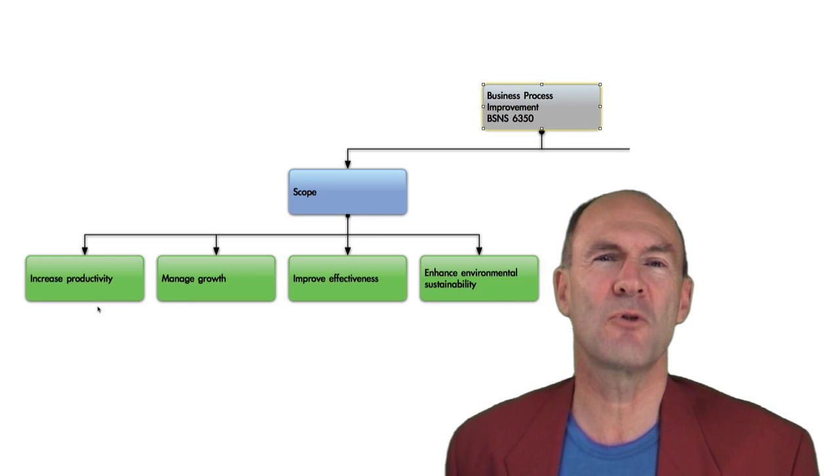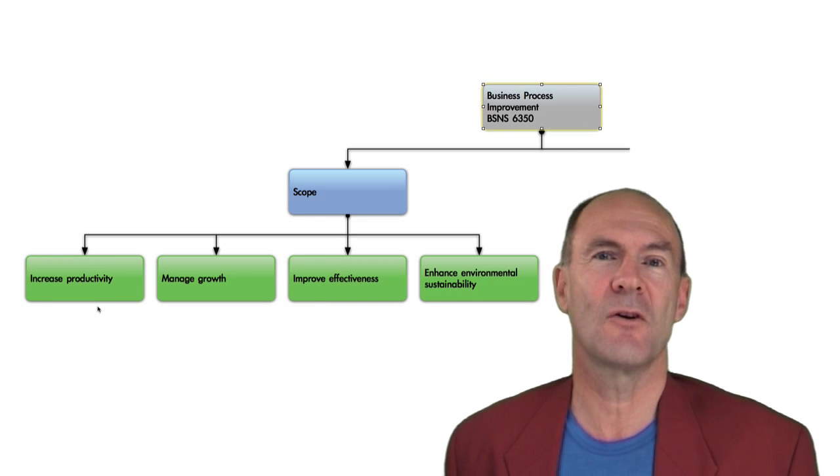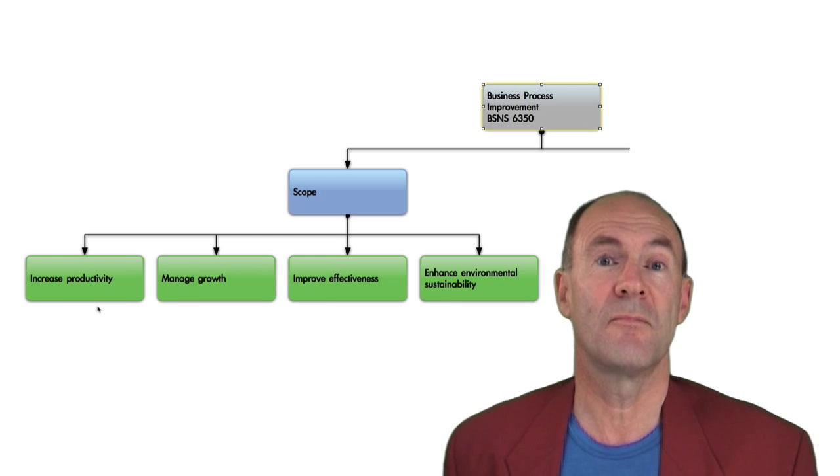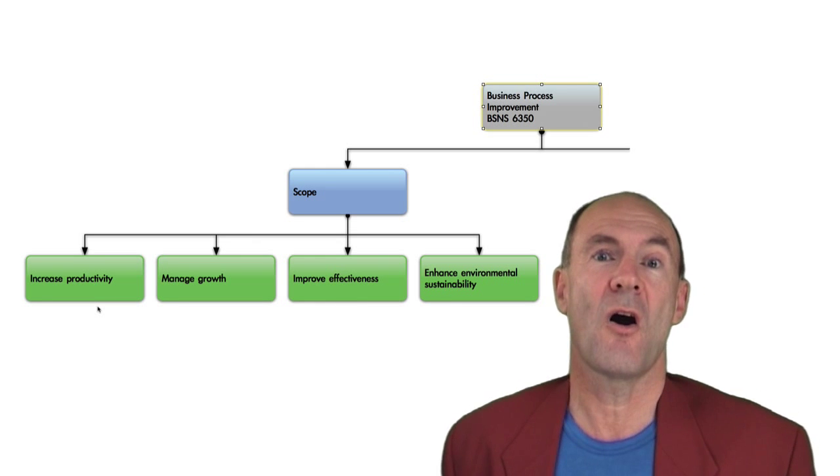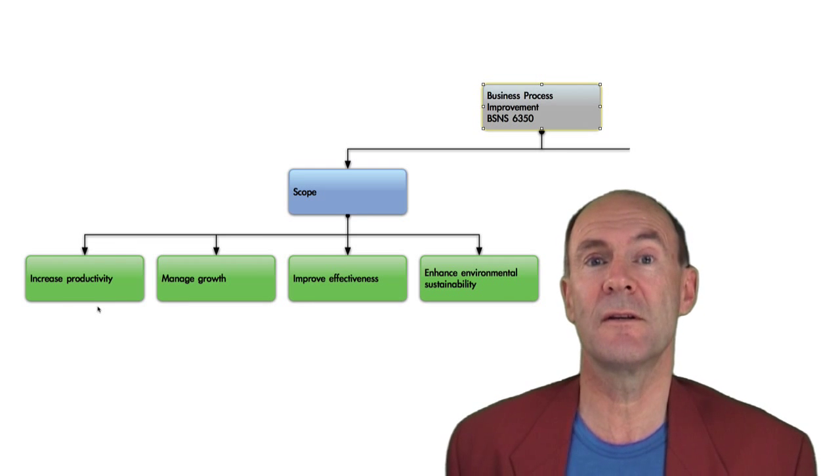Let's look at increasing productivity. We need to distinguish between productivity and production. Production is simply output, the output or the quantity of products or services we are creating. Productivity, in contrast, is concerned with improving the ratio of output compared with the input of resources. These may be resources of raw materials, labour, capital employed, equipment.